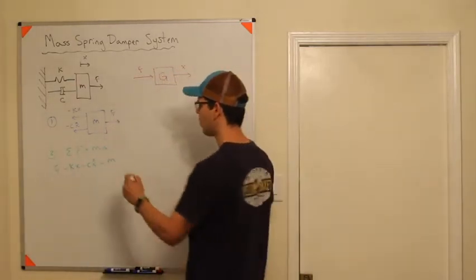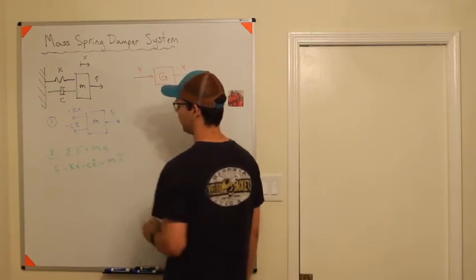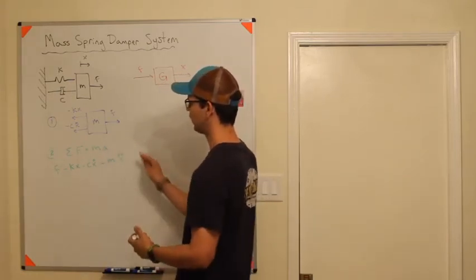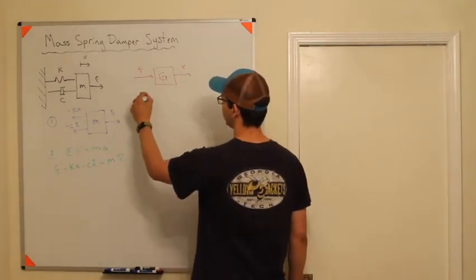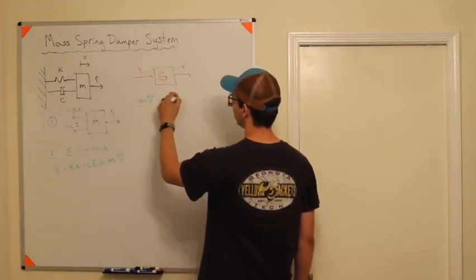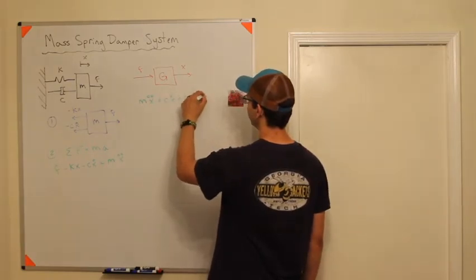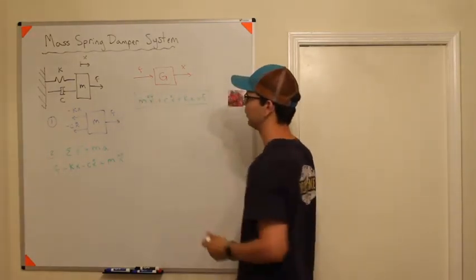All we have to do is put all the x's on one side and f on the right hand side. We'll get mx_double_dot plus cx_dot plus kx equals f. And there you go, that's pretty much all there is to it. Those are the equations of motion.